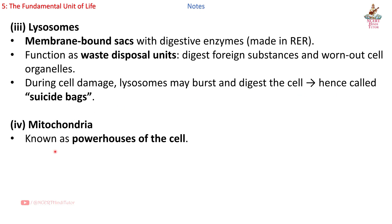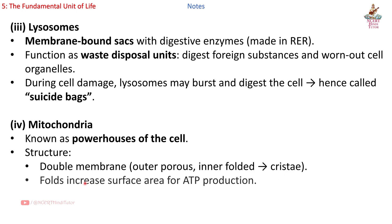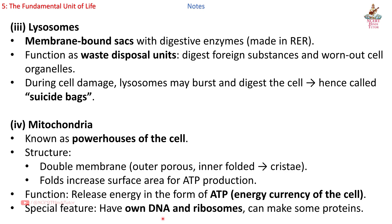4th — Mitochondria: known as powerhouses of the cell. Structure: double membrane — outer porous, inner folded into cristae. Folds increase surface area for ATP production. Function: release energy in the form of ATP (adenosine triphosphate), the energy currency of the cell. Special feature: have their own DNA and ribosomes, and can make some proteins.